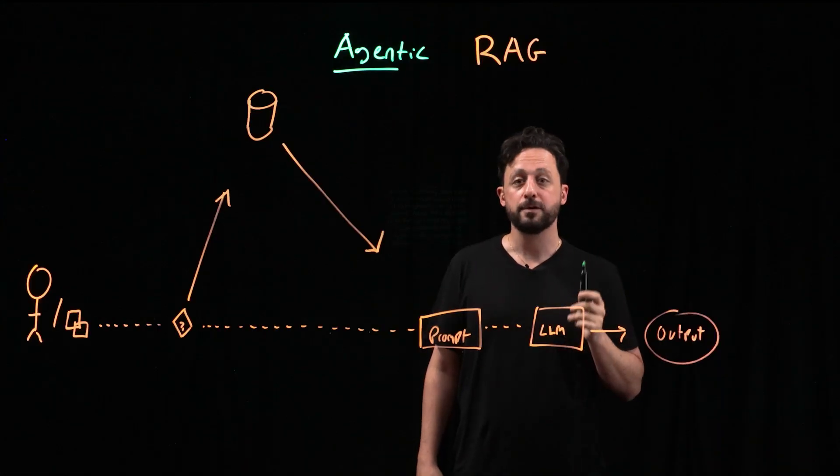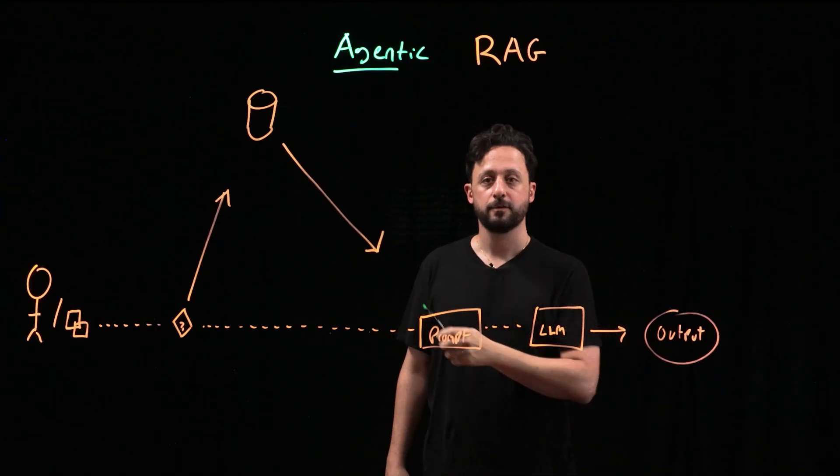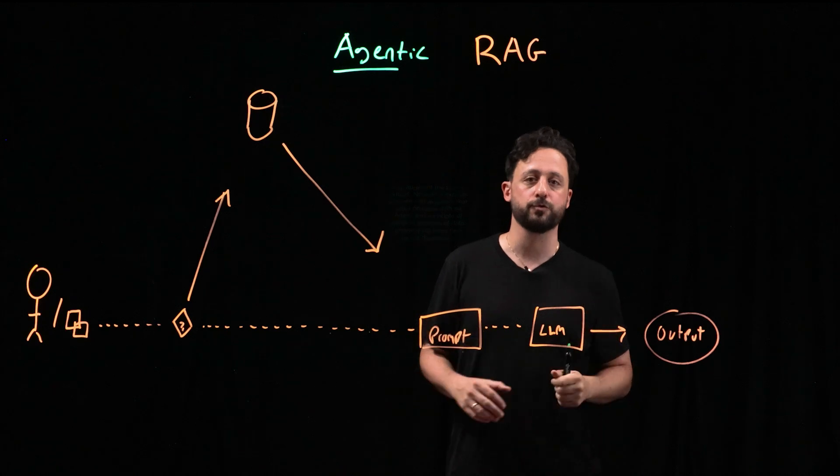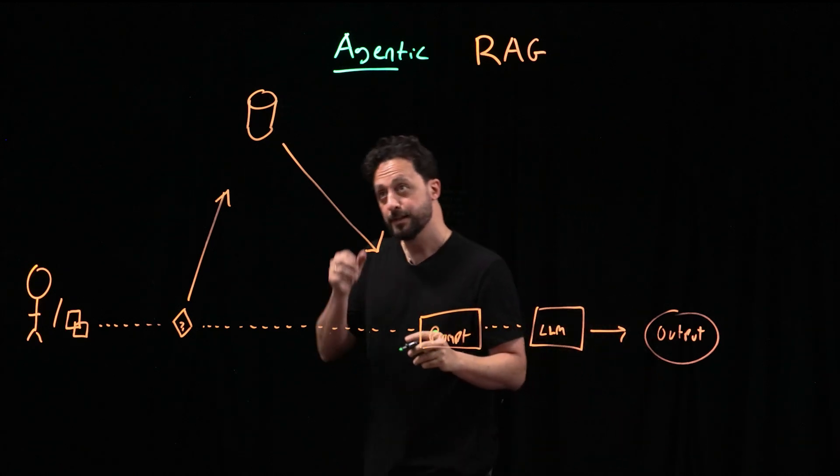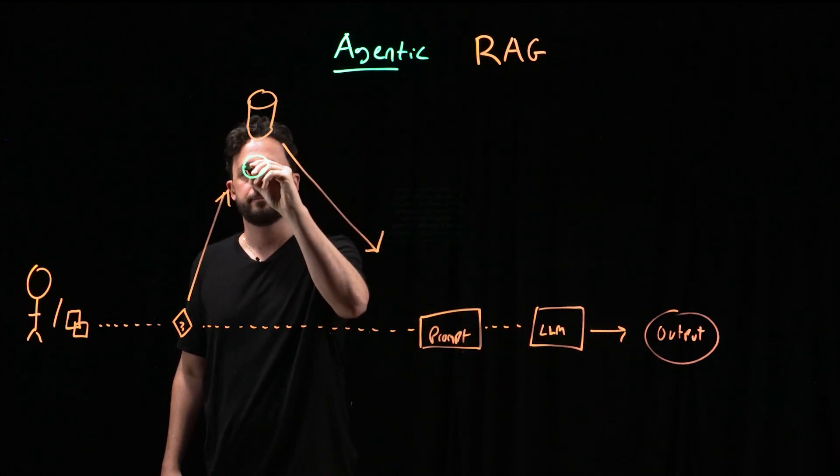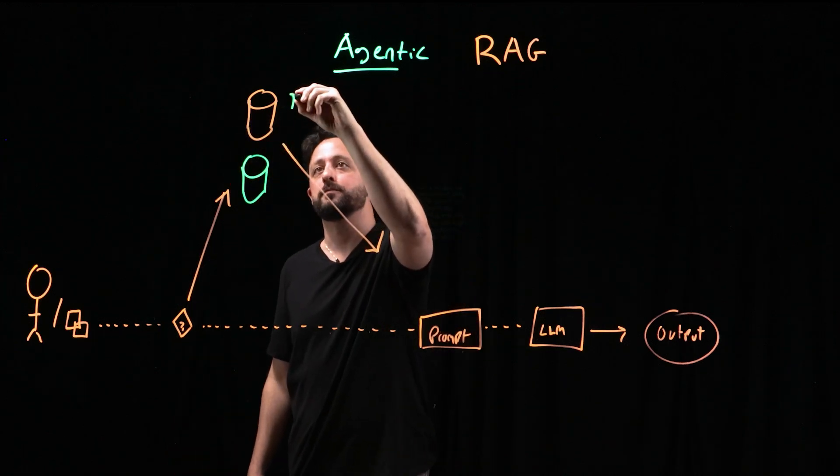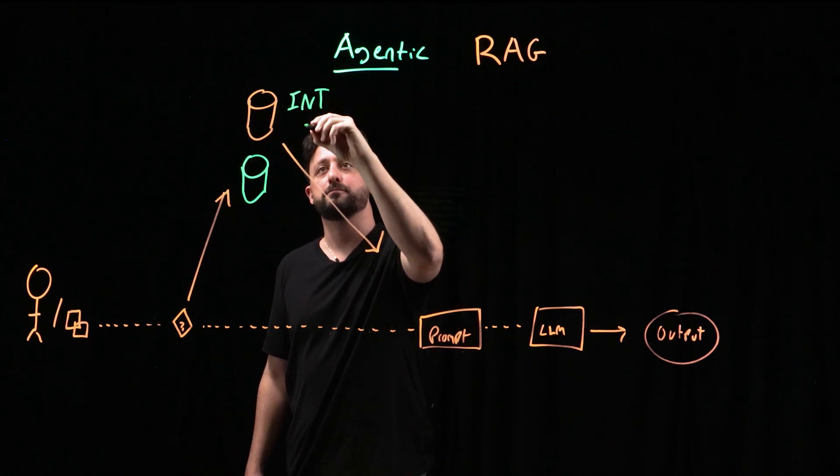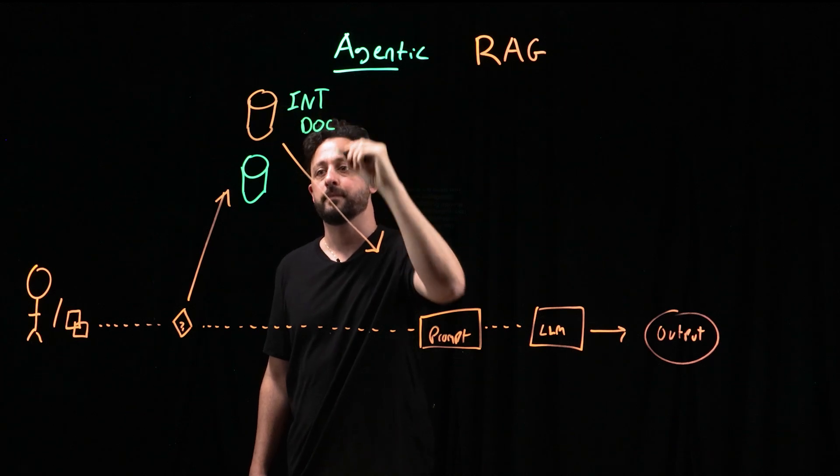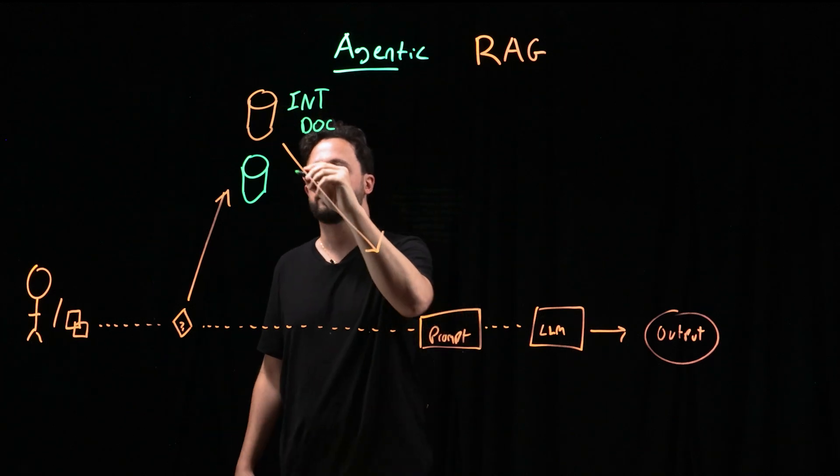Now let's explore how we can augment the initial process with an agent and a couple of different sources of data. So instead of just one single source, let's add a second. And the first one can be internal documentation, and the second one can be general industry knowledge.